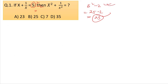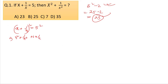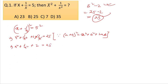Question: x plus 1 by x equal to 5. We square it: x squared plus 1 by x squared plus twice x times 1 by x equals 25. Using the formula (a+b)² = a² + b² + 2ab, we get x squared plus 1 by x squared plus 2 equal to 25. So x squared plus 1 by x squared equals 25 minus 2, equals 23.